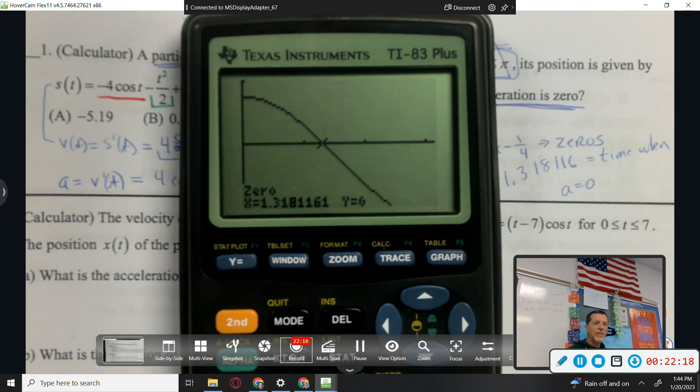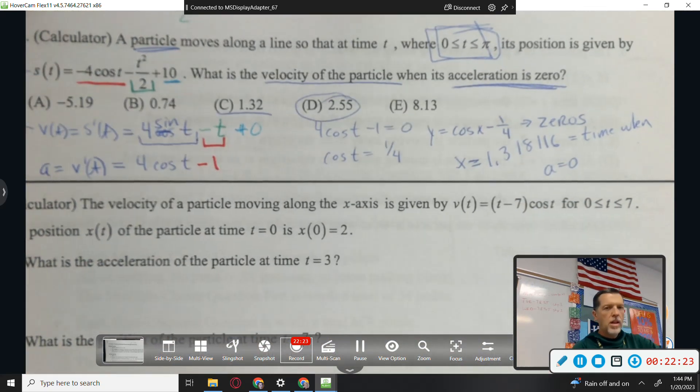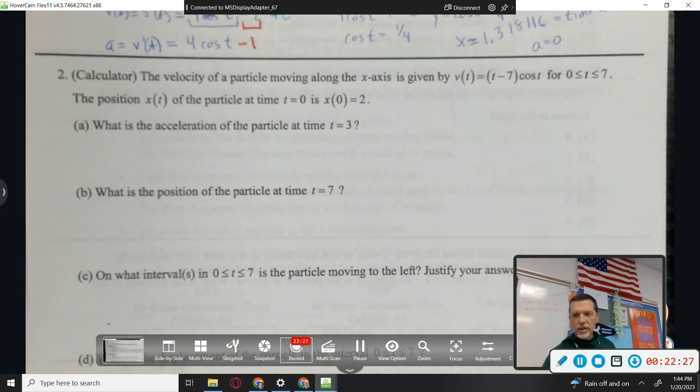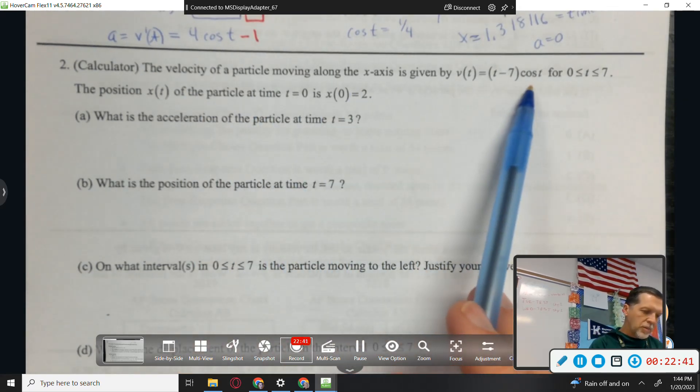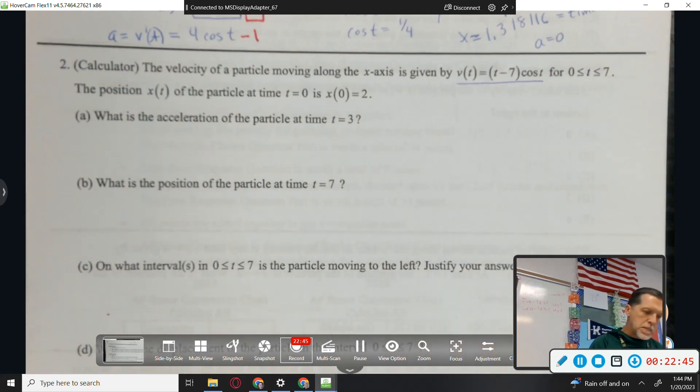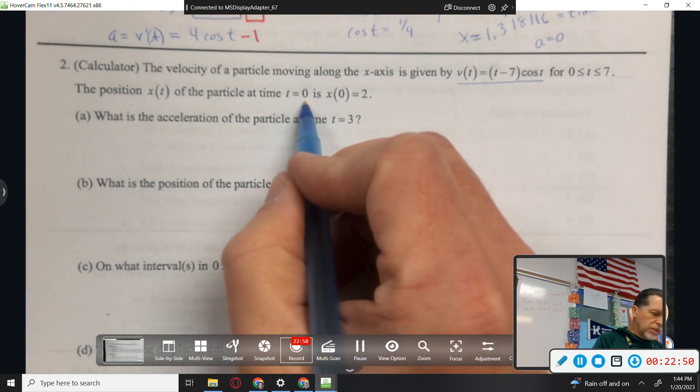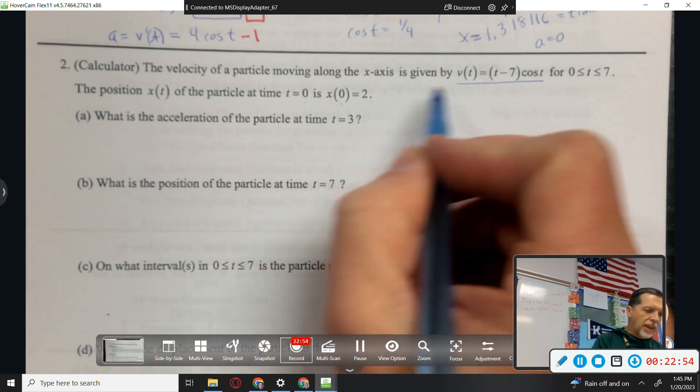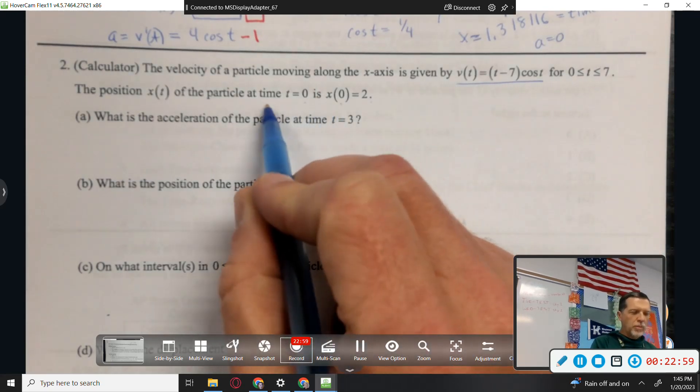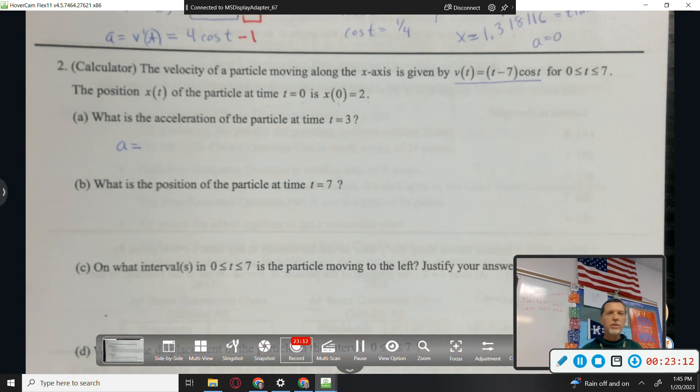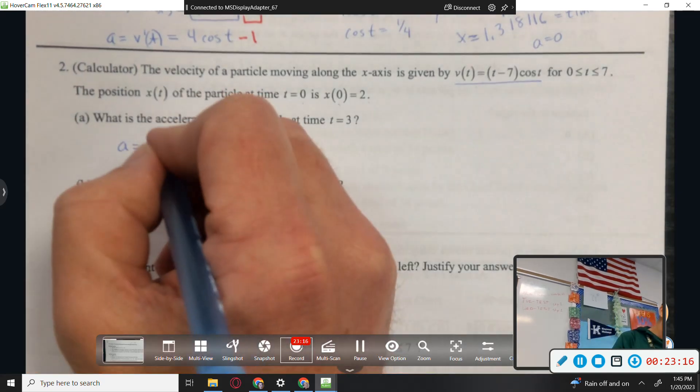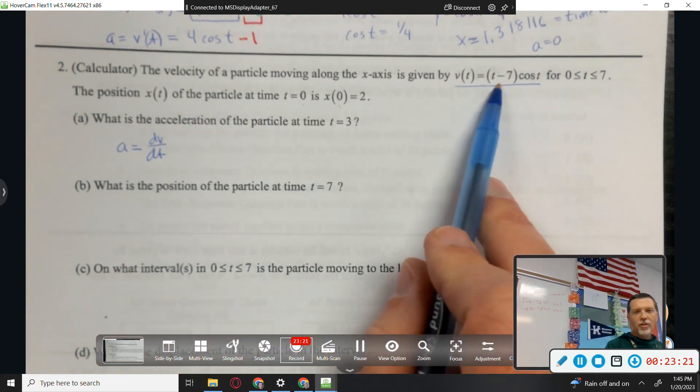Number two. Velocity of the particle is moving along the x-axis given by, okay, we've got velocity. So we have S prime. The position of the particle at t equals zero, x of zero is two. Let's be careful, though. They gave us an equation for velocity but a value for position. So something's going on here. We better be careful. What is the acceleration of the particle at t equals three? So what do I do? Take the derivative of t minus seven times, opposed to t. Now, the last one we did by hand because it was pretty straightforward. It says calculator. And since it's so long, I think I'm going to go ahead and put that in for y1, because I bet I'm going to have to use it more than once.